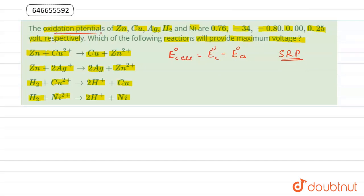They can be converted into standard reduction potential by just reversing the sign of the given oxidation potential. So the standard reduction potential for zinc becomes -0.76, for copper it becomes +0.34, for silver it becomes +0.80, and for hydrogen